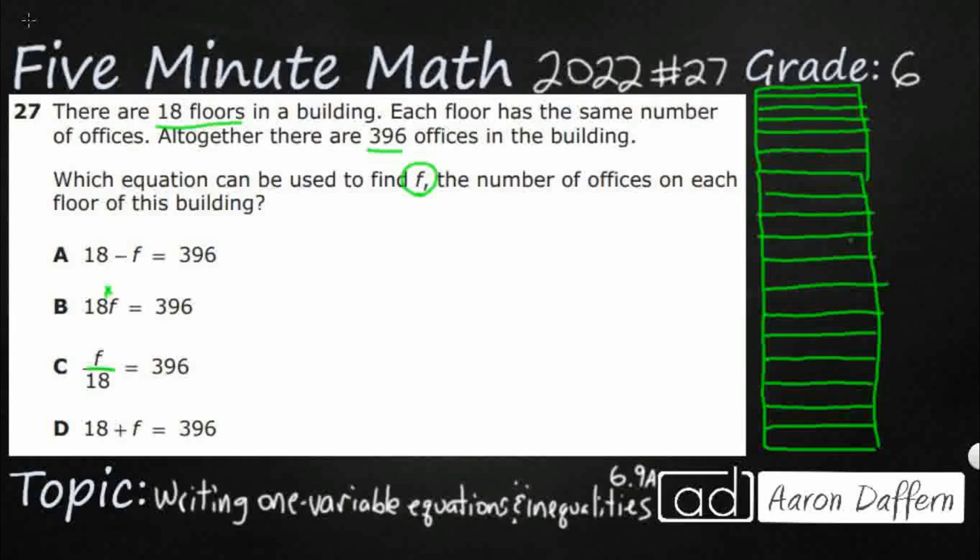Now, each floor has the same number of offices. So this is our big clue right here. Each floor has the same number. Okay, so when we're dealing with the same number of offices, that should be making us think equal groups. So we have equal groups of offices on each floor. Equal groups. That's a dead giveaway for either multiplication or division.